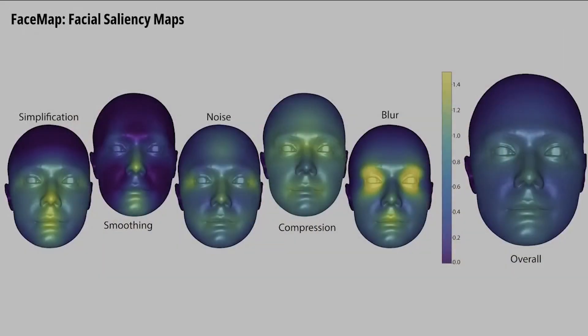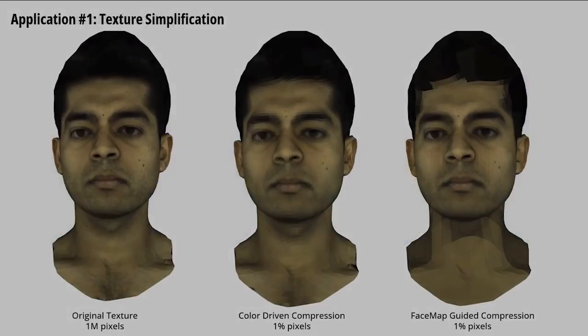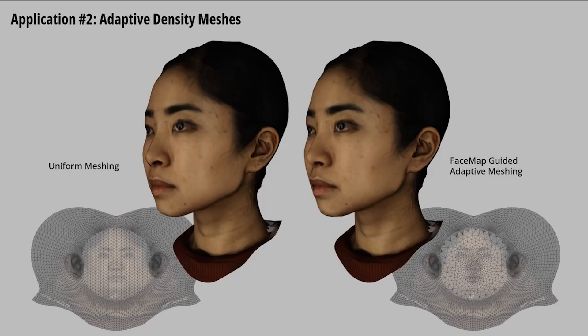Finally, we convert our data into a map of saliency on a 3D face surface, enabling easy use of these results in practice. Our findings can assist in algorithm design and visual computing applications such as texture simplification, remeshing with adaptive density, and 3D Gaussian splatting optimization with limited resources. We also validate the performance improvement in these applications via subjective studies.